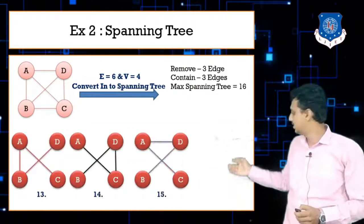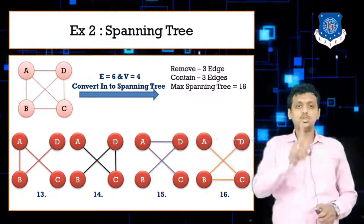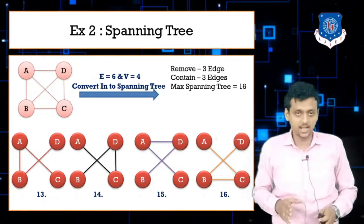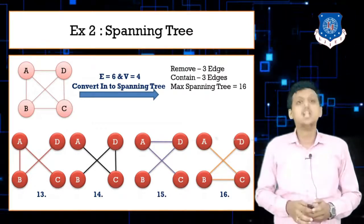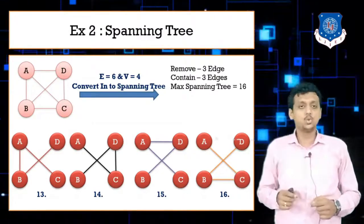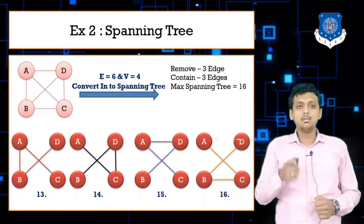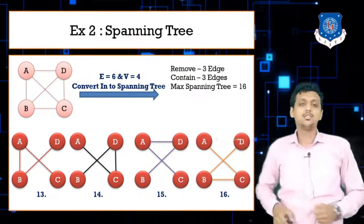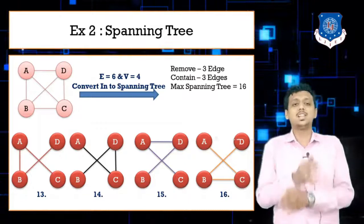You might think that spanning tree 13 forms a cycle because two edges intersect, but you would be wrong. This is not a cycle — they just intersect with each other but it is not a closed path. In figure 13, it is clearly not a closed path; it is just 2 edges that intersect with each other. In a closed path, the source and destination node must be the same, but that is not the case here — the tree still has only 3 edges.